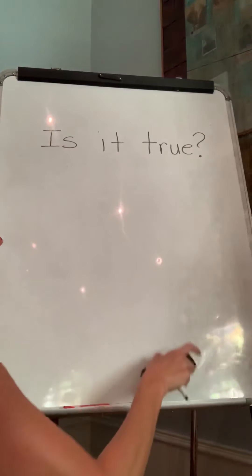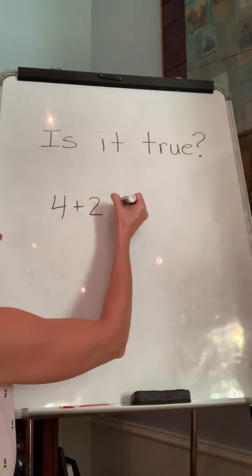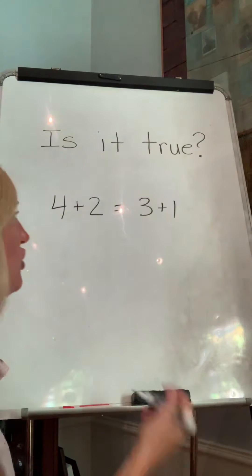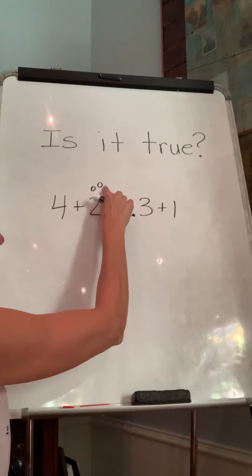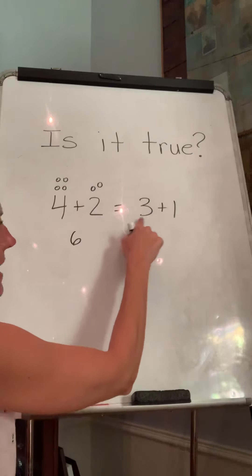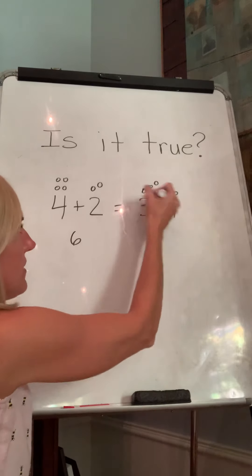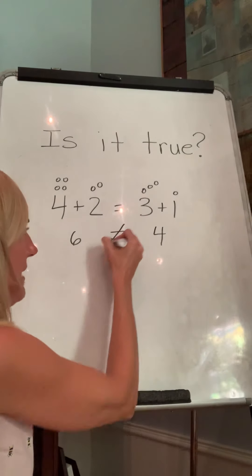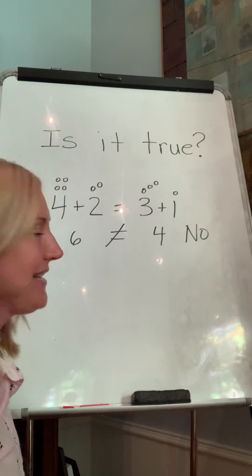What if I put four plus two equals three plus one? Let's check. Four and two more: four, five, six. So we have six on this side — this side equals six. And then we have three plus one more. Three plus one is four. Is that the same? So we're going to line through it. No, we're going to write no. Not equal.